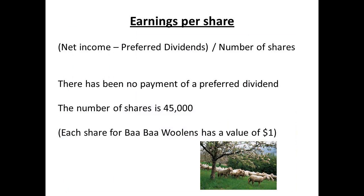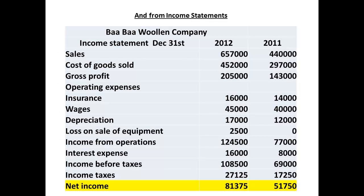We start with earnings per share. For the purpose of this podcast, we are assuming that each share had a value of $1, and that there has been no payment of a preferred dividend. The balance sheet then indicates that we have 45,000 shares. To make the calculation, we take net income, less preferred dividends, and then divide by the number of shares. The figures for net income are taken from the income statements. For 2012, the figure was $81,375, and for 2011, the figure was $51,750.